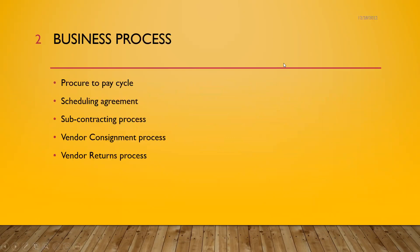So what is a business process? Procure to pay is a business process — they call it the P2P cycle. Getting and buying the raw material from the vendor at a competitive price, that is procure to pay. Scheduling agreement is another business process, also called just-in-time, wherein we create a scheduling agreement, which is an outline agreement.